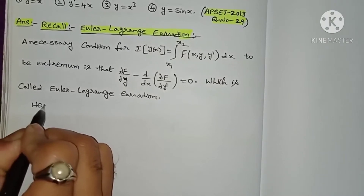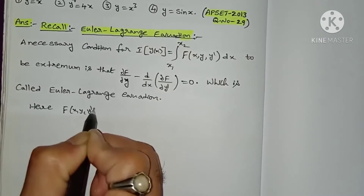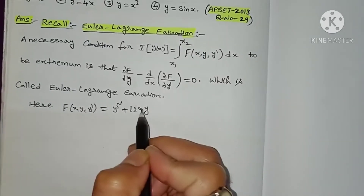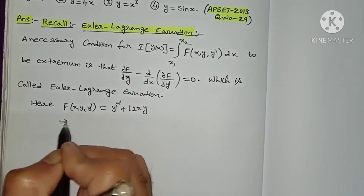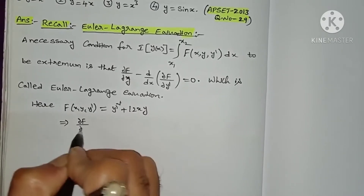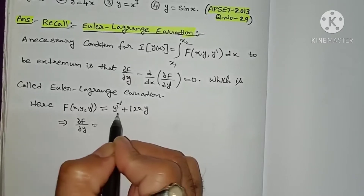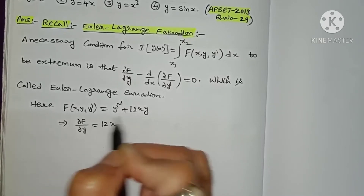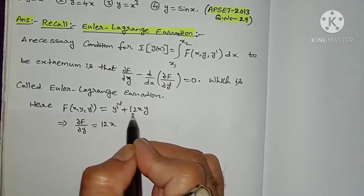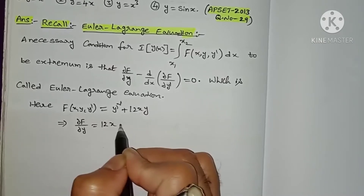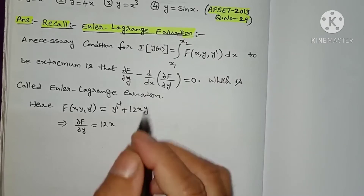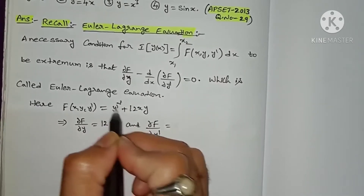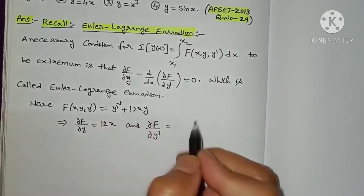Coming to the solution: here we have F(x, y, y') = y'² + 12xy. From this, we find ∂F/∂y — the partial derivative of F with respect to y — which equals 12x, since the partial derivative of 12xy with respect to y is 12x. And ∂F/∂y' — the partial derivative of F with respect to y' — equals 2y', since the partial derivative of y'² with respect to y' is 2y'.